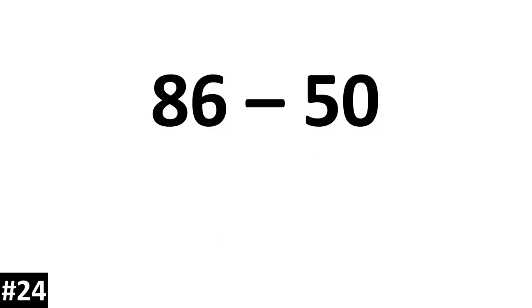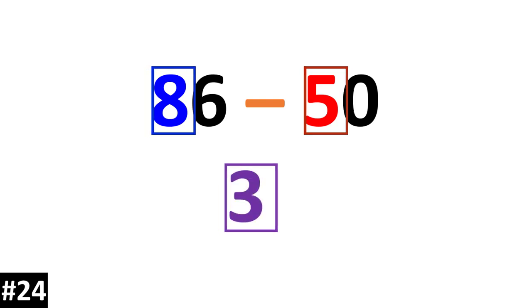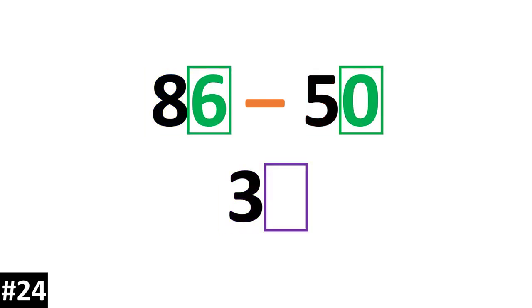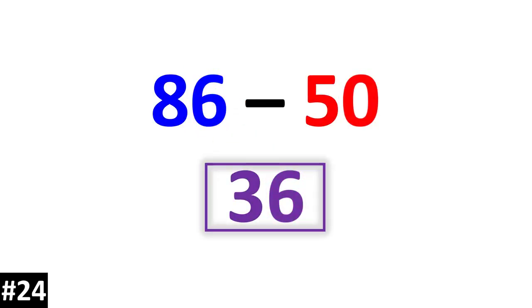86 minus 50. 8 10s minus 5 10s is 3 10s. We look to the ones: 6 minus 0 is 6. So our answer is 36.